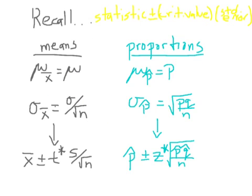A little review here. Remember the general formula for all confidence intervals: statistic plus or minus critical value times the standard error. In section 10.2 for means, we derived the formula x-bar plus or minus t-star s over the square root of n.